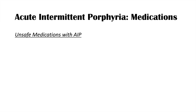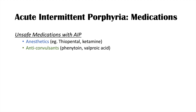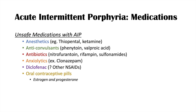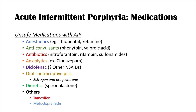Some unsafe medications with AIP include: anesthetics such as thiopental and ketamine; anticonvulsants like phenytoin and valproic acid; antibiotics like nitrofurantoin, rifampin, and sulfa drugs; anxiolytics like clonazepam; diclofenac and some other NSAIDs. Other unsafe medications include oral contraceptive pills because they contain estrogen and progesterone - OCPs can be a common trigger in young women first diagnosed with AIP. Diuretics like spironolactone can also trigger AIP, along with tamoxifen and metoclopramide.